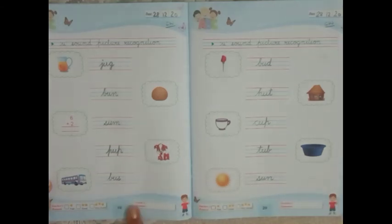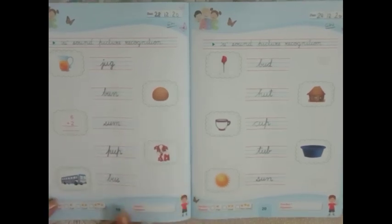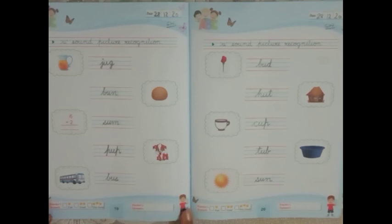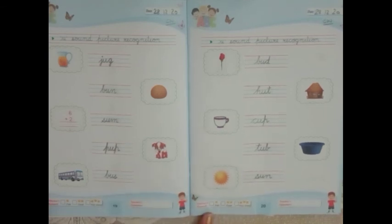So do page number 19 and 20 in your English workbook 2 which is for classwork. Do both pages in this workbook and in your homework English workbook, do these two pages as homework also.